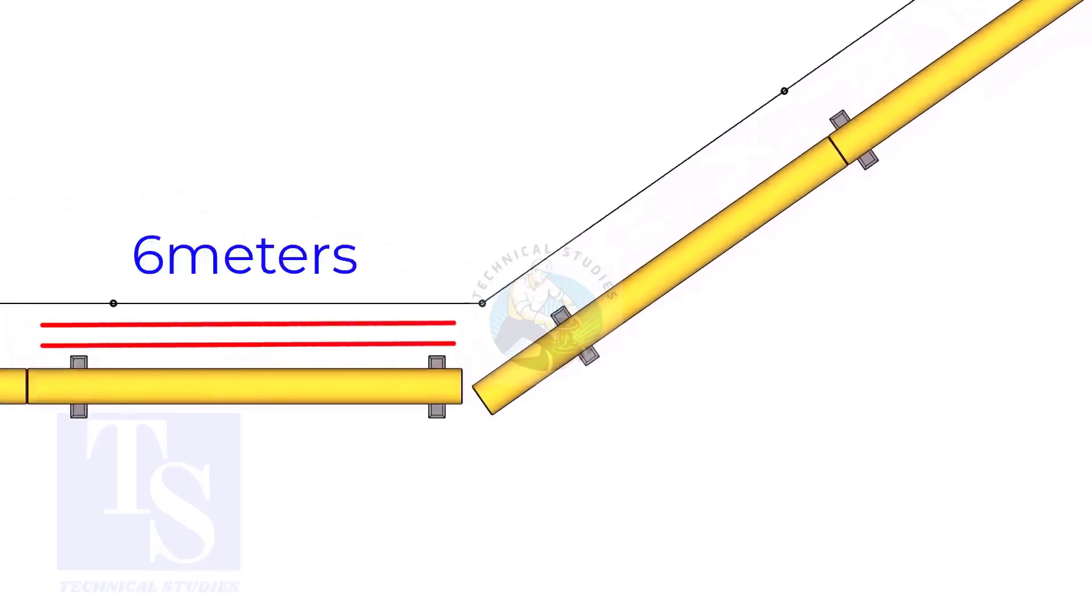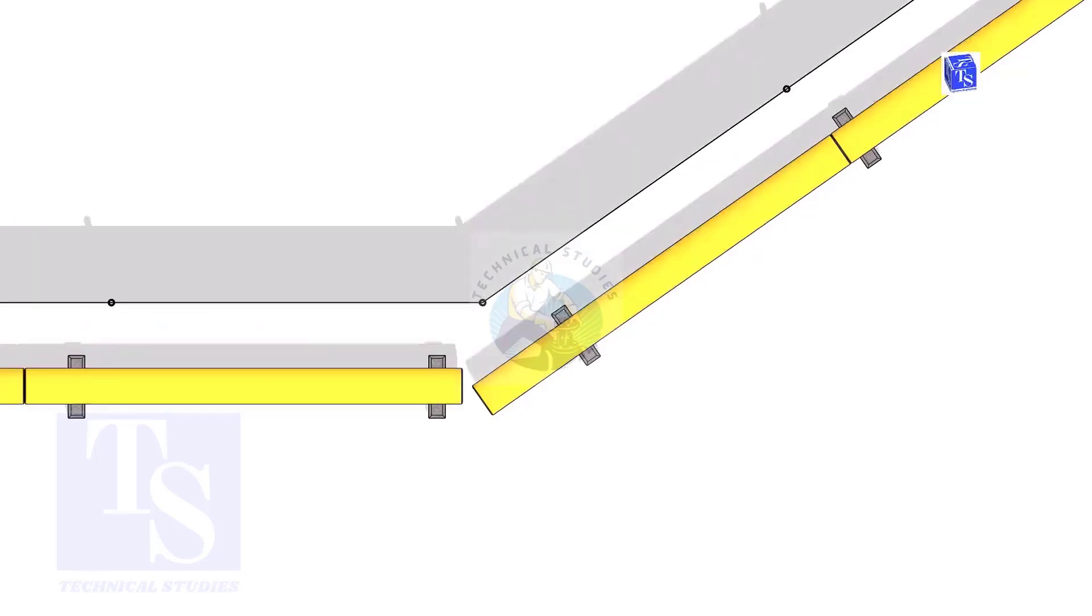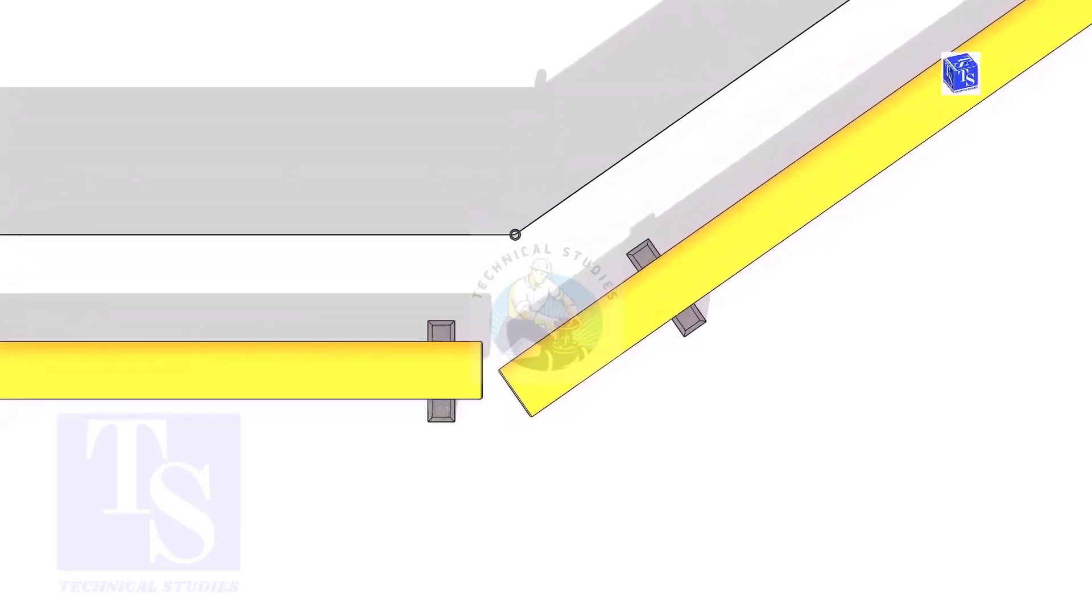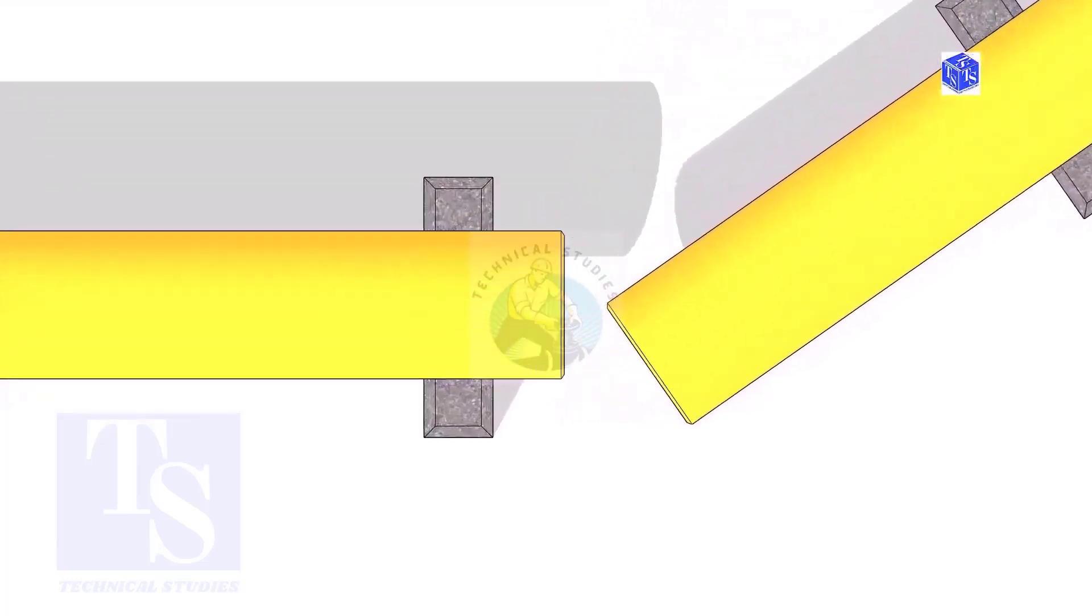The pipe shall be parallel to the fencing, not necessarily the entire length, but at least 6 meters on both sides. Not necessary, the centerlines of both pipes are in a line.